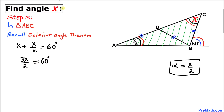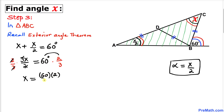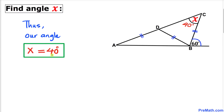Let's isolate X by multiplying both sides by the reciprocal 2/3. The 2s cancel and the 3s cancel, so X equals 60 times 2 divided by 3, which gives us 40 degrees. Therefore our angle X turns out to be 40 degrees.